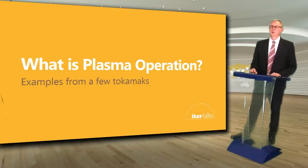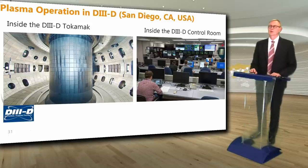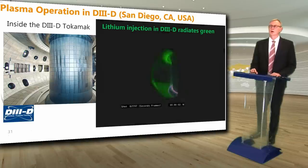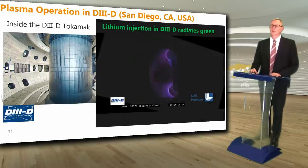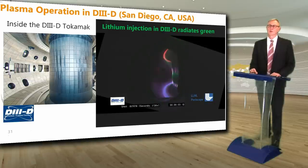Now let me give a few examples of actual tokamak operation from existing machines. This shows plasma operation on the DIII-D tokamak in San Diego, California, where you see the inside of the tokamak and the inside of the control room. This video shows the DIII-D plasma with lithium injection, which radiates green in the plasma. The colder edge region of the plasma shows up more in the visible light region of the spectrum.